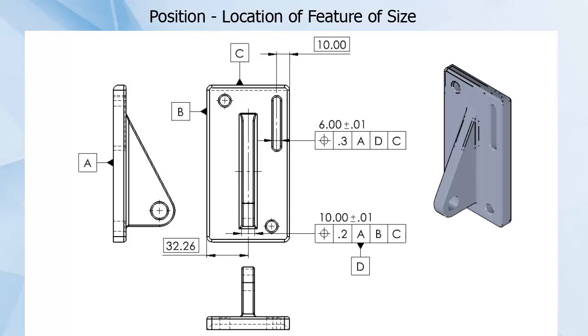Many other basic dimensions are missing from this example, but you can see here the second datum feature referenced is datum D, which is the center plane of the tab we just looked at.